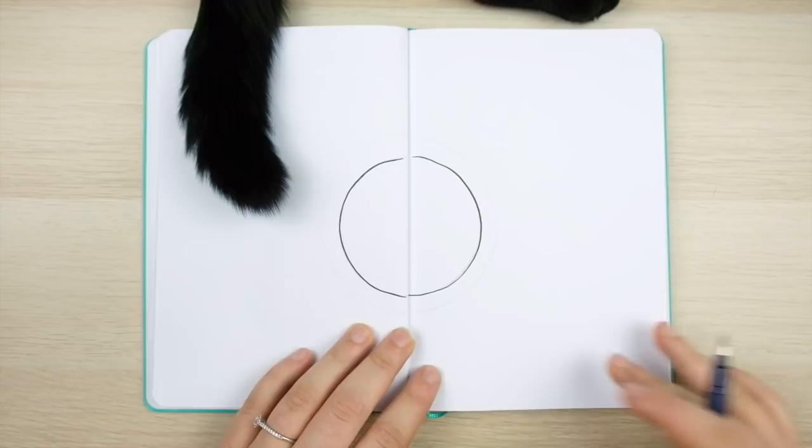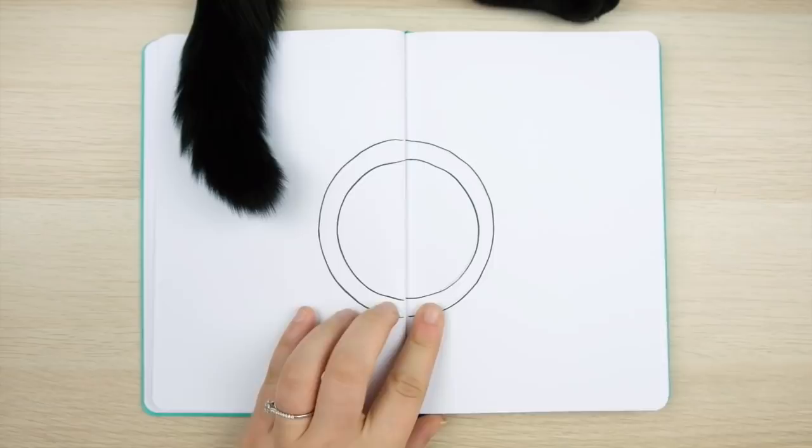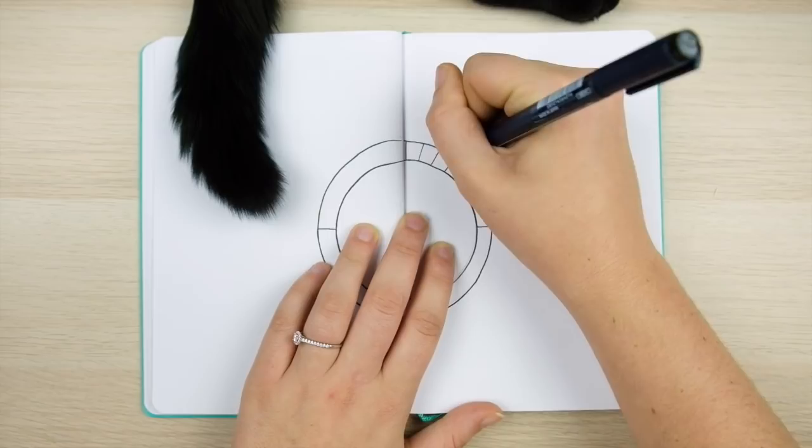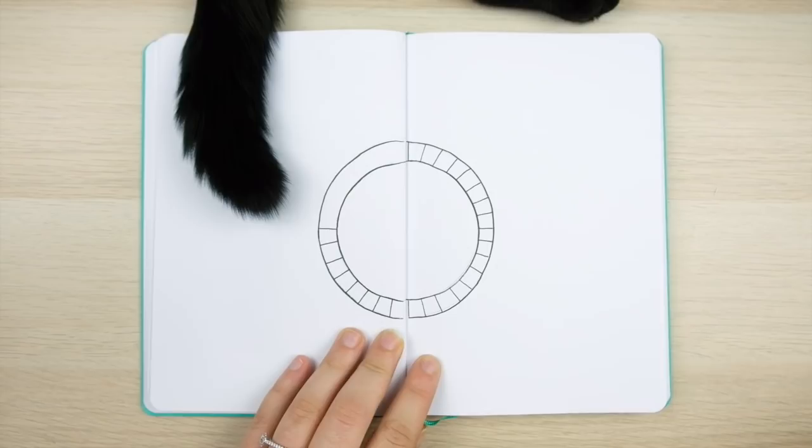This ends up giving me this ring in the center of the page. I'm then going to divide this ring into 32 equal pieces and the reason I do 32 rather than 30 is that 32 pieces is by far the easiest to do by eye if you just keep cutting the circle in half. So first you split this ring in half and then you split that into quarters, then eighths, sixteenths, and finally it should be split into 32 roughly equal sections.